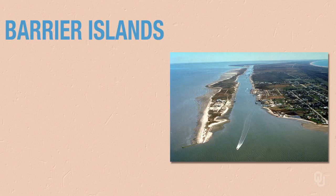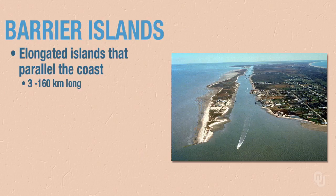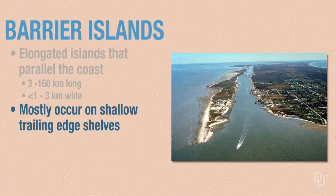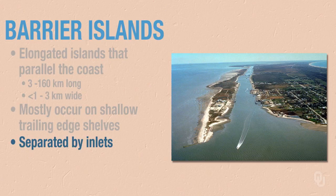This will be the summary for barrier islands. So what are barrier islands? They're elongate islands that parallel the coast, generally very long but not very wide. They mostly occur on shallow trailing edge shelves like the Atlantic coast of North America. They're separated by inlets and they're separated from the mainland by bays, lagoons, or marshes.